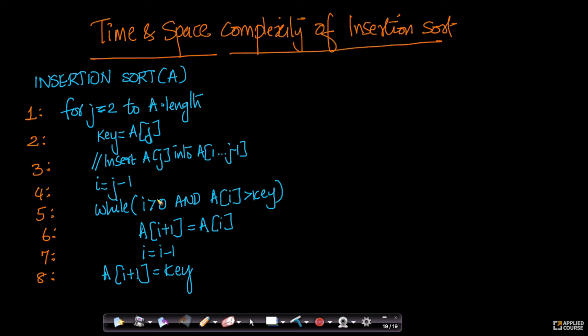Given that we have understood the model of computation, now let us do some simple analysis for both time and space complexity. First we will start with time complexity of insertion sort. Let me explain how to do that. This is the pseudo code that we have for insertion sort. It has eight lines of code.